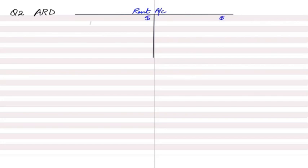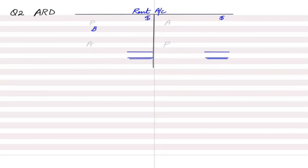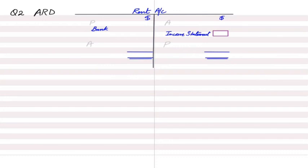Rent is an expense for the business. For expenses we use the mnemonic PAAP — Prepaid, Accrued, Accrued, Prepaid. Whenever we pay rent, the entry is: debit rent account, credit bank account. At the end of the year, we transfer it to the income statement: debit income statement, credit rent account.